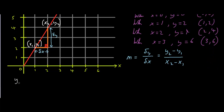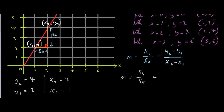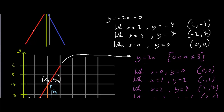Now, we know that y2 is 4 and y1 is 2. We also know that x2 is 2 and x1 is 1. So the gradient, which is m, is change in y over change in x. y2 is 4 and y1 is 2, and x2 is 2 and x1 is 1. So the gradient in this case would be 4 minus 2, which is 2, over 2 minus 1, which is 1. So the gradient must be equal to 2. But we already know this, as we know that the line is y equals 2x.